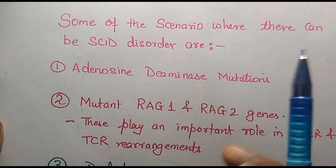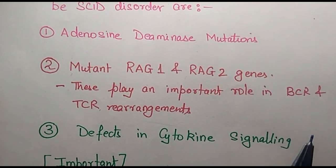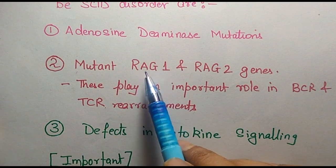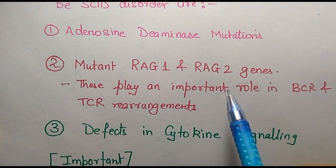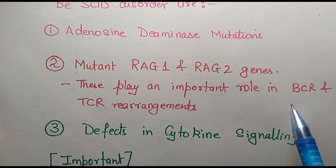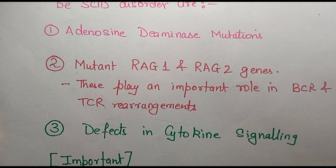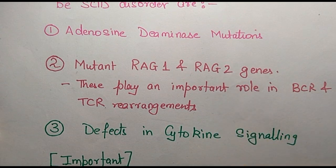Another very important cause involves the RAG1 and RAG2 genes — Recombination Activating Gene 1 and Gene 2. Both these genes have a very important role in B cell and T cell development because they are involved in the B cell receptor and T cell receptor rearrangements and formation. Therefore, mutations in RAG1 and RAG2 also produce an individual with the SCID phenotype, because both B cells and T cells will be non-functional.